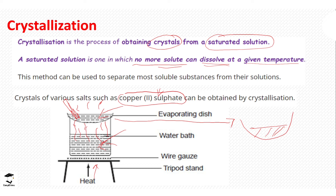If it cools slowly, evaporation occurs slowly and crystals begin to form slowly. If you compare the crystals formed by this crystallization process with those formed by simple evaporation, the crystals from crystallization are bigger, have clearer shapes, and are more defined. In summary, we heat the solution to saturation — where enough water has evaporated that the solid can no longer dissolve — then allow it to evaporate slowly so that crystals can begin to form.